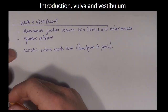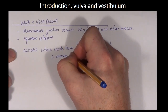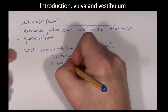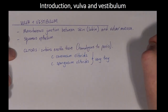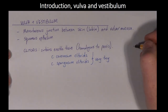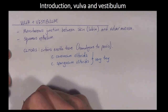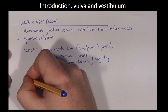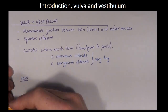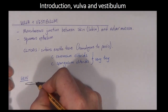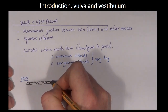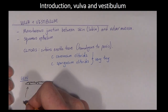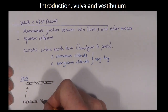There is a mucocutaneous junction at the labia where the stratified squamous epithelium of the vulva joins the skin. The skin is tough and well keratinized and doesn't allow very much water to pass through it. The mucous membrane of the vulva, on the other hand, is much more permeable to water and remains moist.